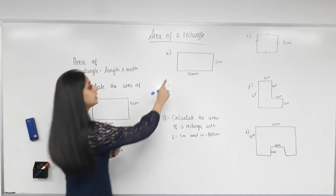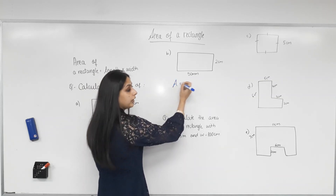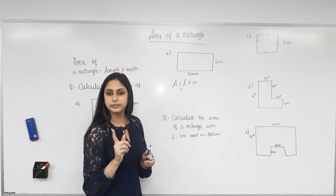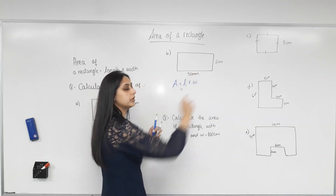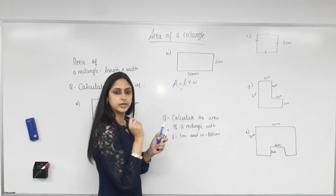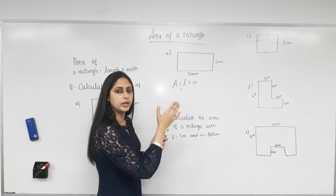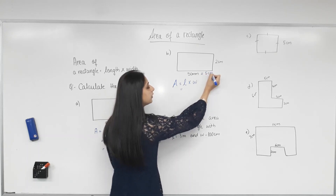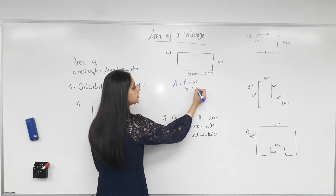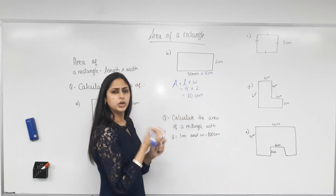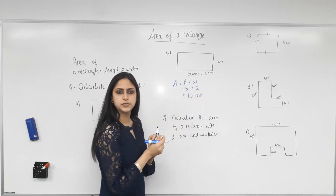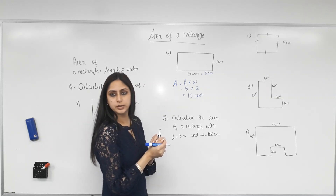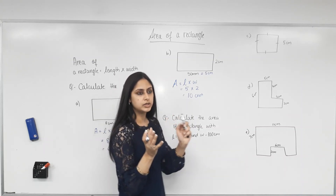Next example — again a rectangle. Write the formula: area equals length times width. But are the units the same? No. So we need to convert. We can convert centimeters into millimeters or millimeters into centimeters. To avoid decimals, let's convert: divide by 10, so 50 millimeters becomes 5 centimeters. It doesn't matter which side you call length and which you call width — in multiplication, order is not important.